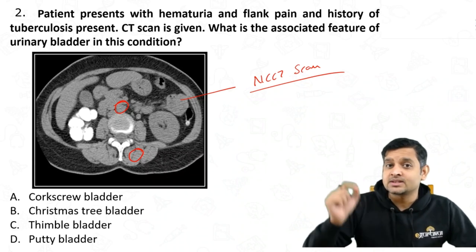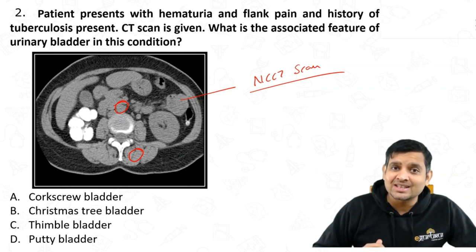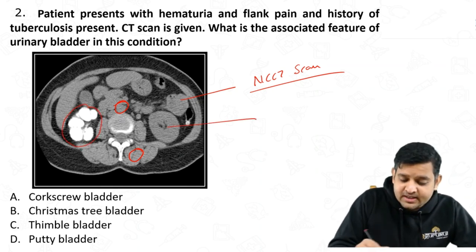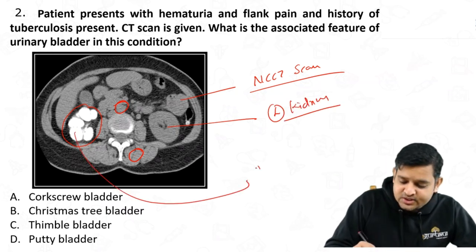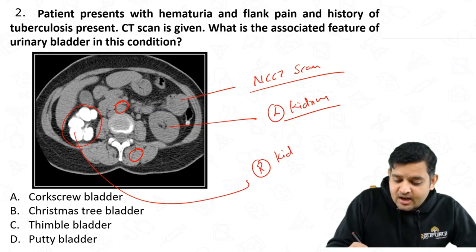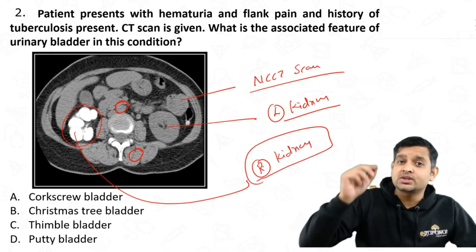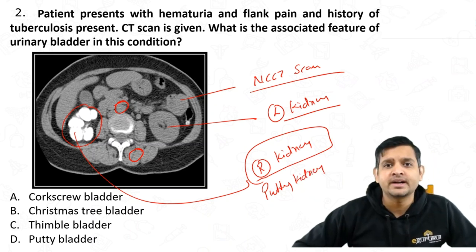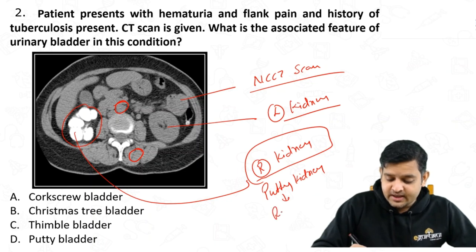If the vessel appears denser than the muscle, it is a contrast CT. On this non-contrast CT, look at the left kidney on one side — and correspondingly, this has to be the right kidney. This right kidney is completely calcified. When the kidney is so calcified, this is called a cemented kidney or putty kidney, which is a feature of renal TB.